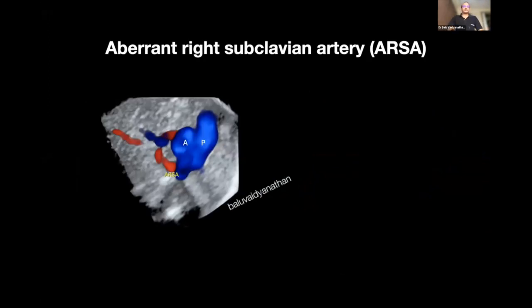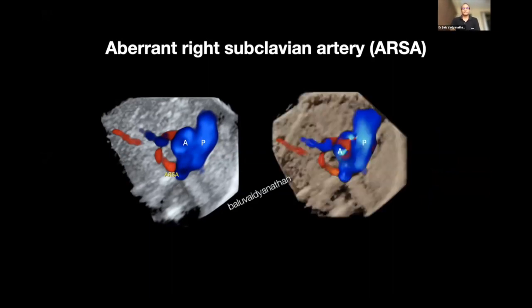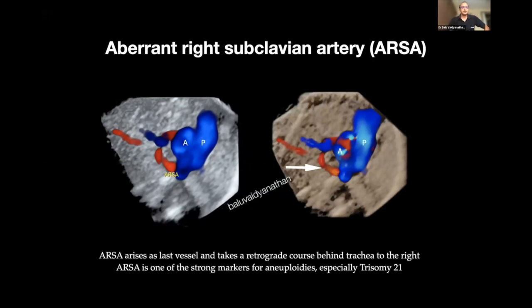The last lesion is ARSA — aberrant right subclavian artery. ARSA is diagnosed in the three vessel tracheal view. Normally you see the blue flow, but with ARSA you see an additional vessel going towards the right and posterior to the trachea. The 3D rendering also demonstrates this very well. ARSA takes a retrograde course behind the trachea and goes towards the right side — that is the diagnostic clue.